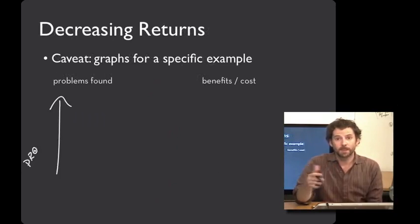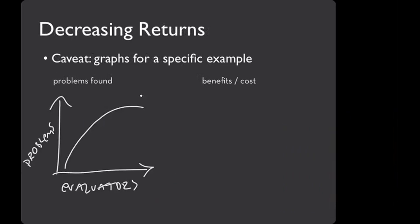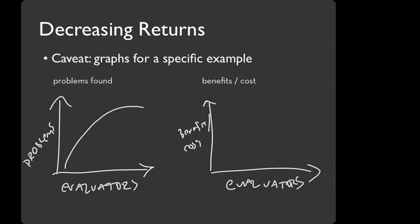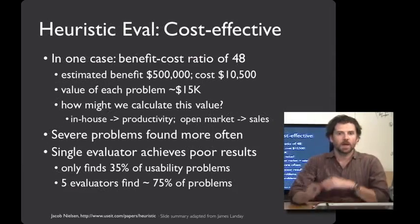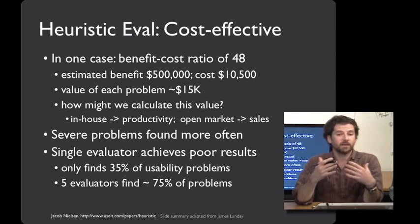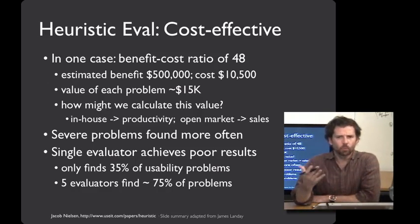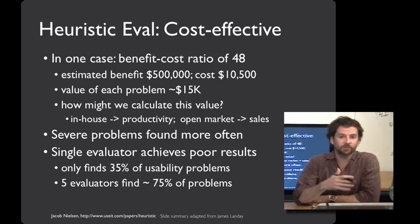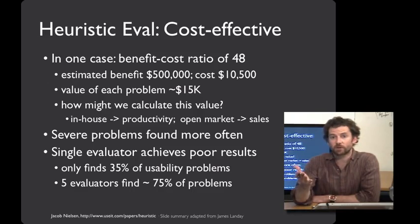Why not have lots of evaluators? As you add more evaluators, they do find more problems, but it kind of tapers off over time. From a cost-benefit perspective, it just stops making sense after a certain point. Jacob Nielsen's rule of thumb for heuristic evaluation is that three to five people tends to work pretty well, and that's been my experience too. In one study that Jacob Nielsen ran, he estimated that the cost of the problems found with heuristic evaluation were $500,000, and the cost of performing it was just over $10,000 — a 48-fold benefit-cost ratio for this particular user interface.